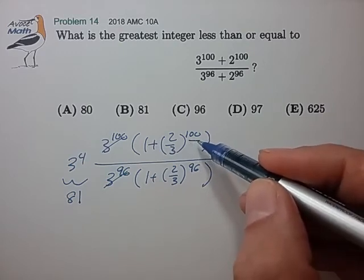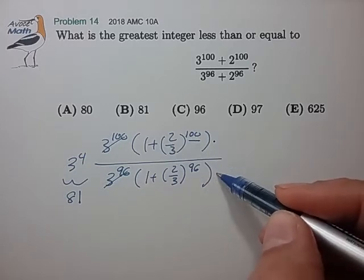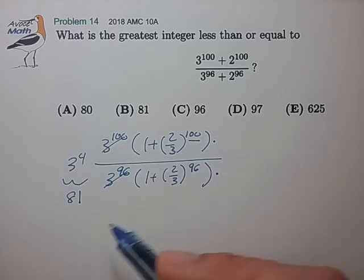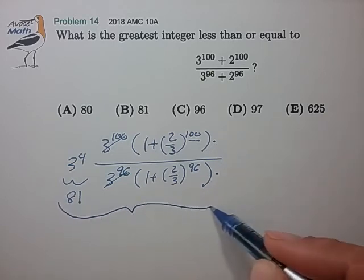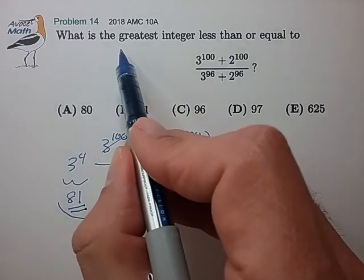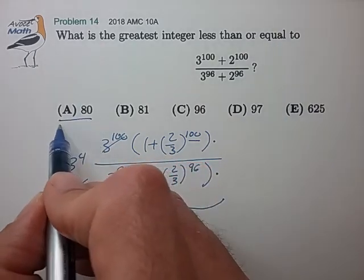So what this means is the ratio of this expression to this expression is just a little bit less than 1. And so that means that this entire product is just a hair smaller than 81. And that means that the greatest integer less than or equal to this is 80.